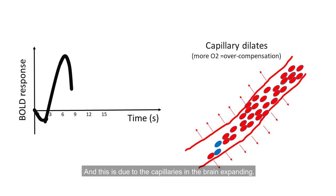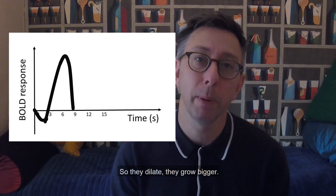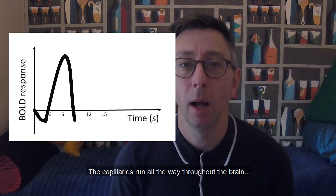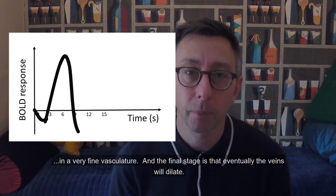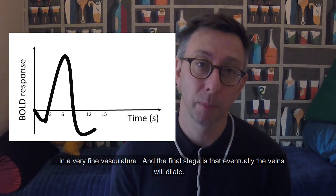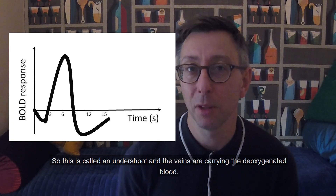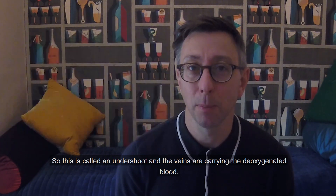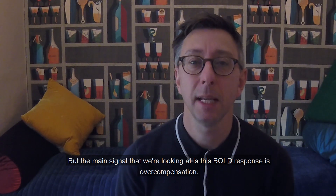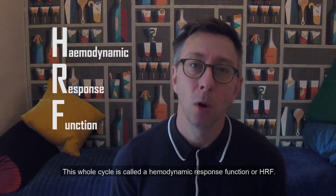The BOLD signal is due to the capillaries in the brain expanding — they dilate and grow bigger. The capillaries run all the way throughout the brain as a very fine vasculature. The final stage is that eventually the veins will dilate — this is called an undershoot — and the veins are carrying the deoxygenated blood, so this goes in the opposite direction. But the main signal we're looking at is this BOLD response, this overcompensation. This whole cycle is called a hemodynamic response function, or HRF.